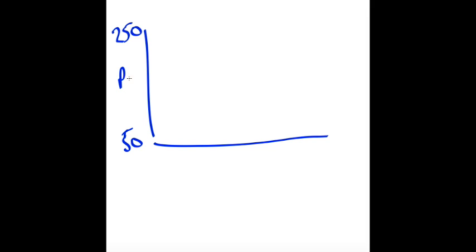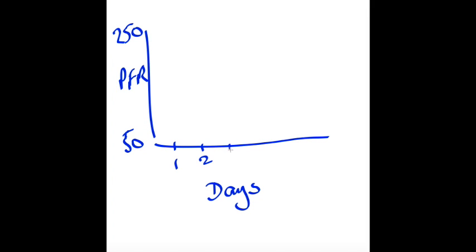So these are the peak flow readings. And here, again, we've got days. We've got 1, 2, 3, 4, 5, 6. Now, in this case, in this example, we'll assume that this patient's best peak flow reading, when they're well, is 320 litres per minute.